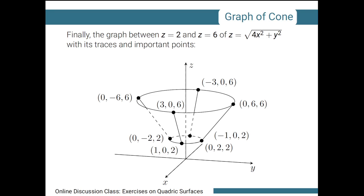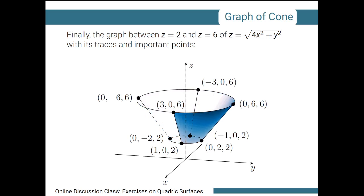Finally, when we label all the points and identify the portion of the traces inside the cone, replacing the covered lines with broken lines, we obtain the final sketch. Here is the cone in 3D space. This concludes our discussion on this exercise. In the next video, we will look at the graph of a hyperboloid of one sheet.